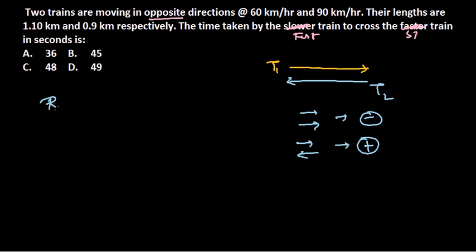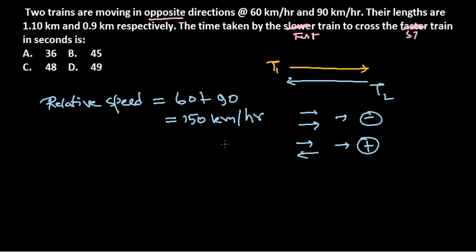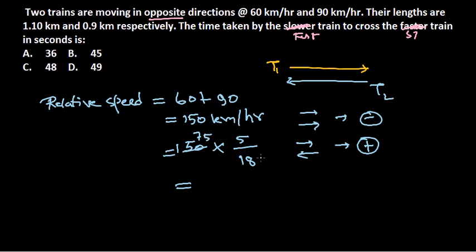Since both trains are moving in opposite directions, the relative speed = 60 + 90 = 150 km/h. Now we need the answer in seconds, so let's convert to meters per second. We multiply by 5/18, which gives us 150 × 5/18 = 125/3 meters per second.